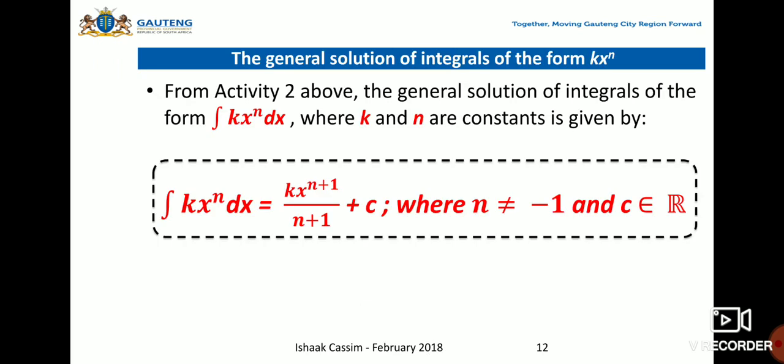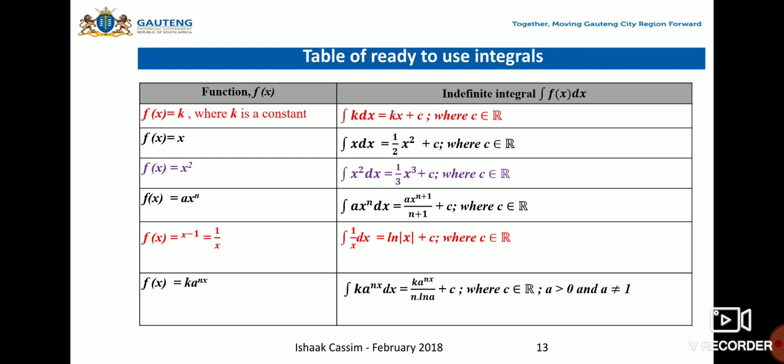Now, the general solution of integrals of the form ∫kx^n dx, where k and n are constants, is given by the formula: ∫kx^n dx = k·x^(n+1)/(n+1) + C, where n ≠ -1 and C ∈ ℝ.